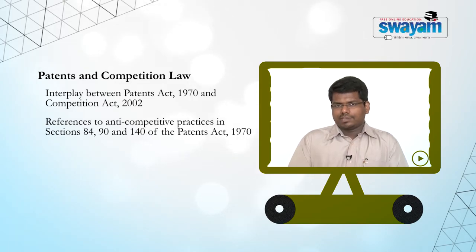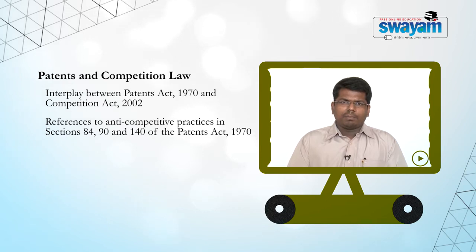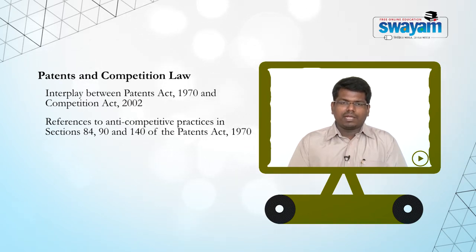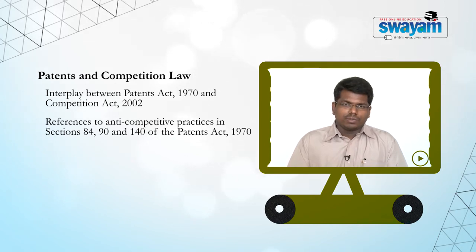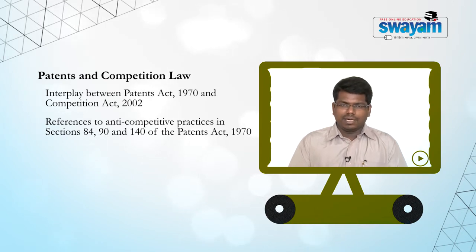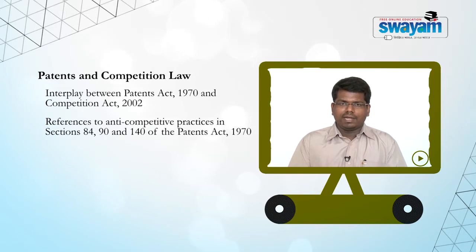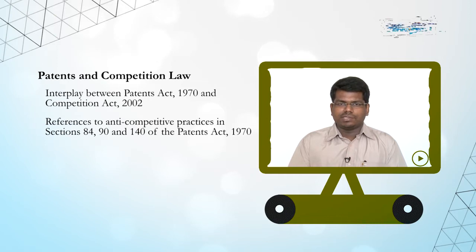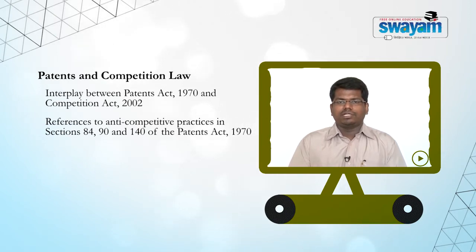Since we are talking about IEP legislations, what needs to be pointed out is that apart from the Patents Act, which contains an express provision that prevents imposition of restrictive covenants or anti-competitive agreements on third parties, there is no other legislation with a similar counterpart. This is surprising, considering that TRIPS flexibilities permit India to incorporate similar provisions within every IEP legislation as a safeguard to prevent abuse of intellectual property.